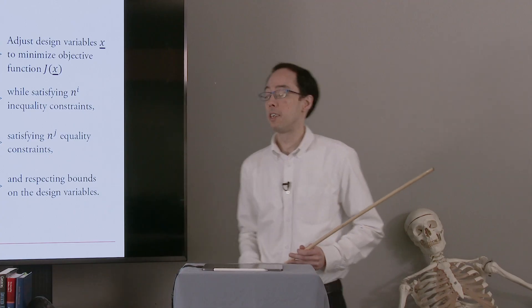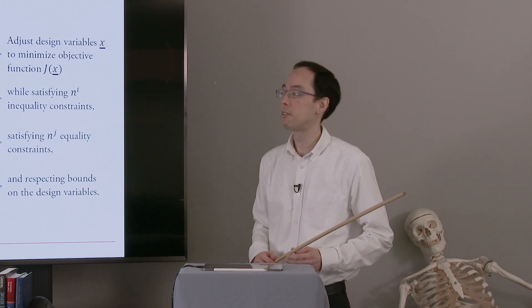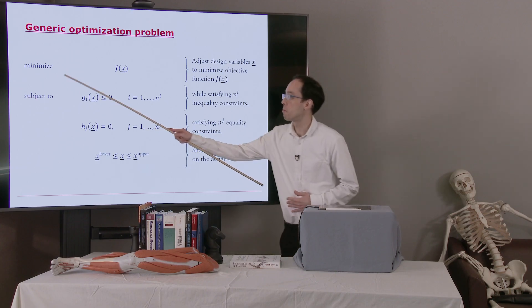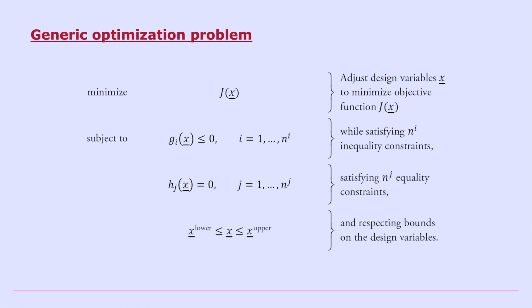This is actually not an issue. Even if we're trying to maximize something, we can simply minimize the negative. So this is not a limitation, but many times you'll see just a generic optimization problem written as a minimization problem. So we want to adjust these design variables x to minimize the objective function j.